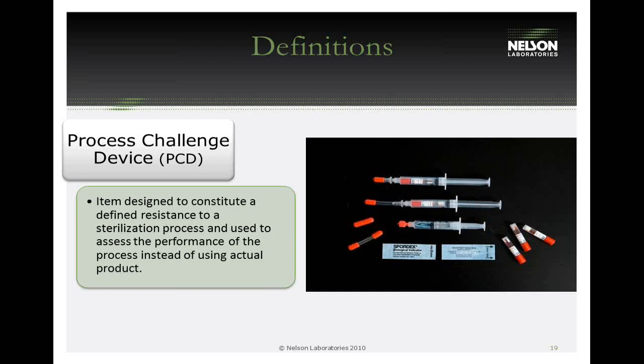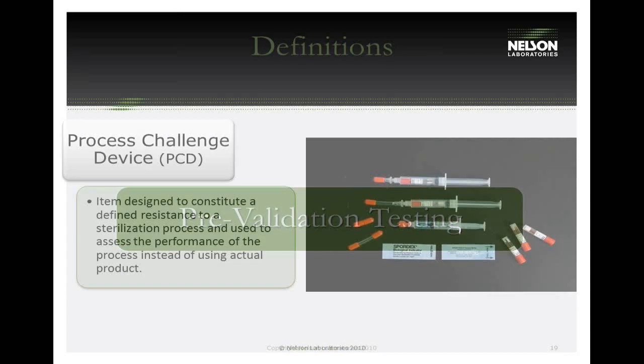Spore-forming organisms cannot be effectively used as BIs for radiation sterilization, because the most radiation-resistant organisms are those that repair their DNA most quickly — typically not spore formers, but organisms like Micrococcus. Additionally, about 30% of North American organisms are equally or more resistant to radiation than Bacillus pumilus, the commonly marketed radiation BI. For that reason, radiation sterilization relies on dosimetric release based on actual product bioburden rather than biological indicators.